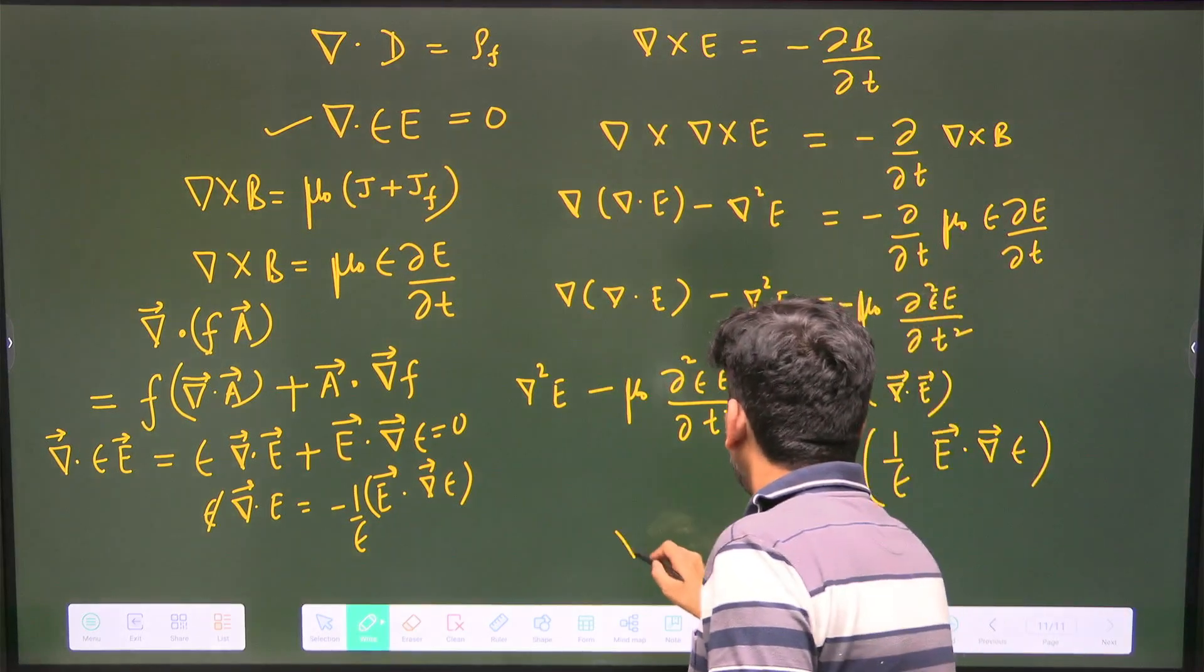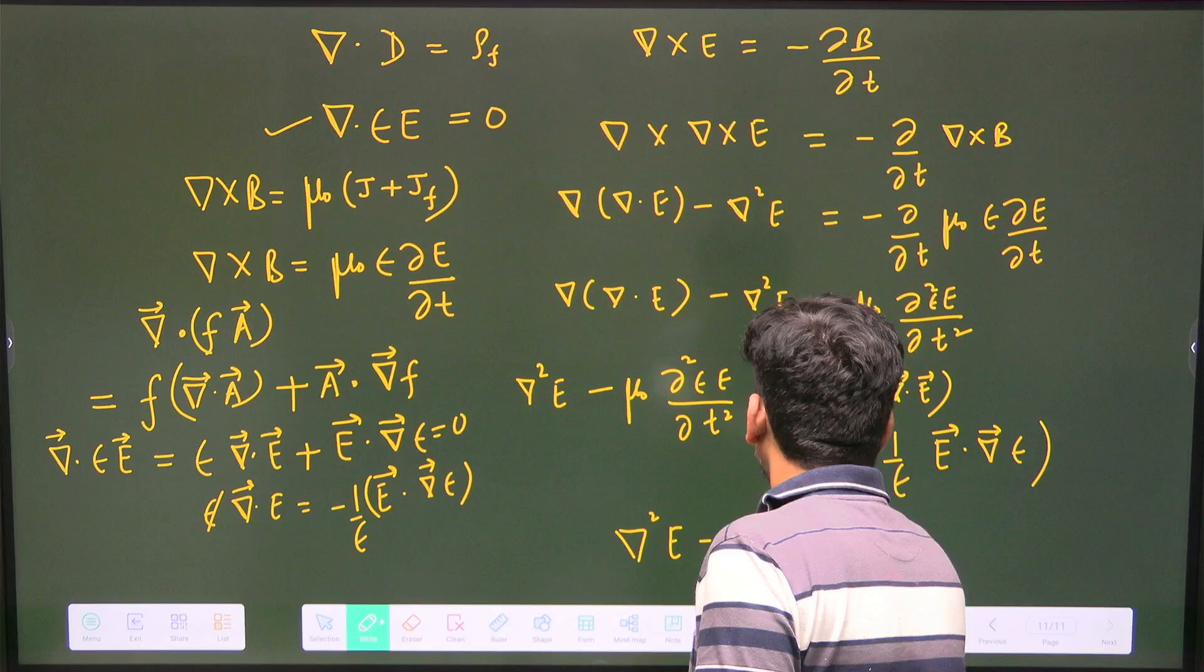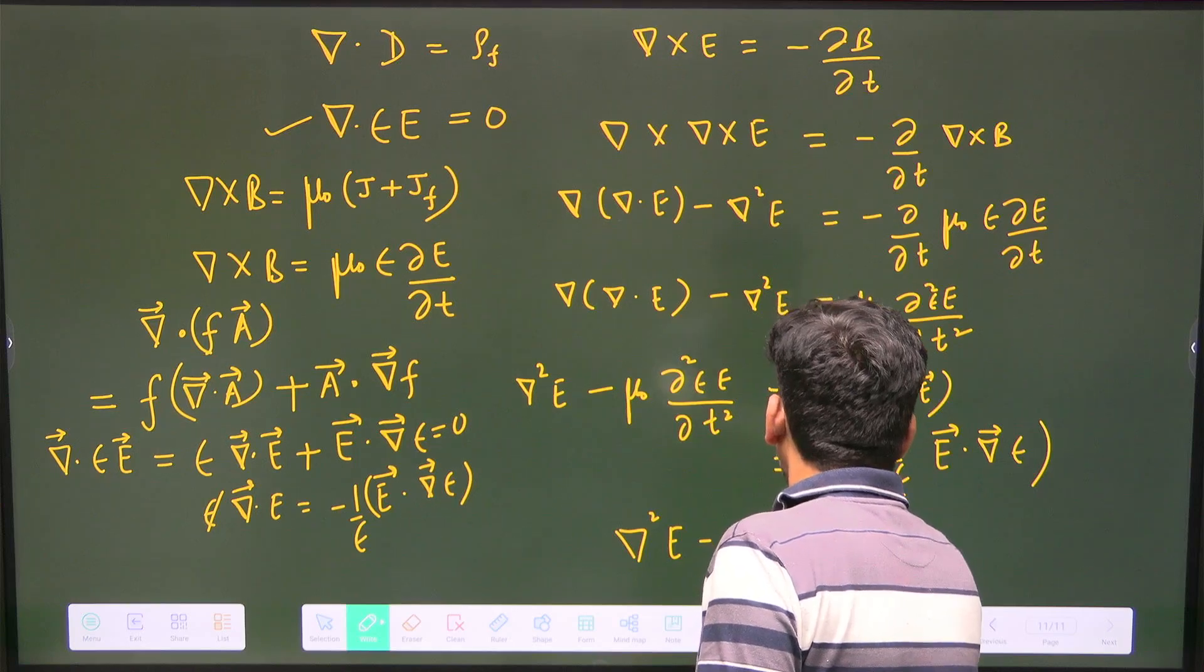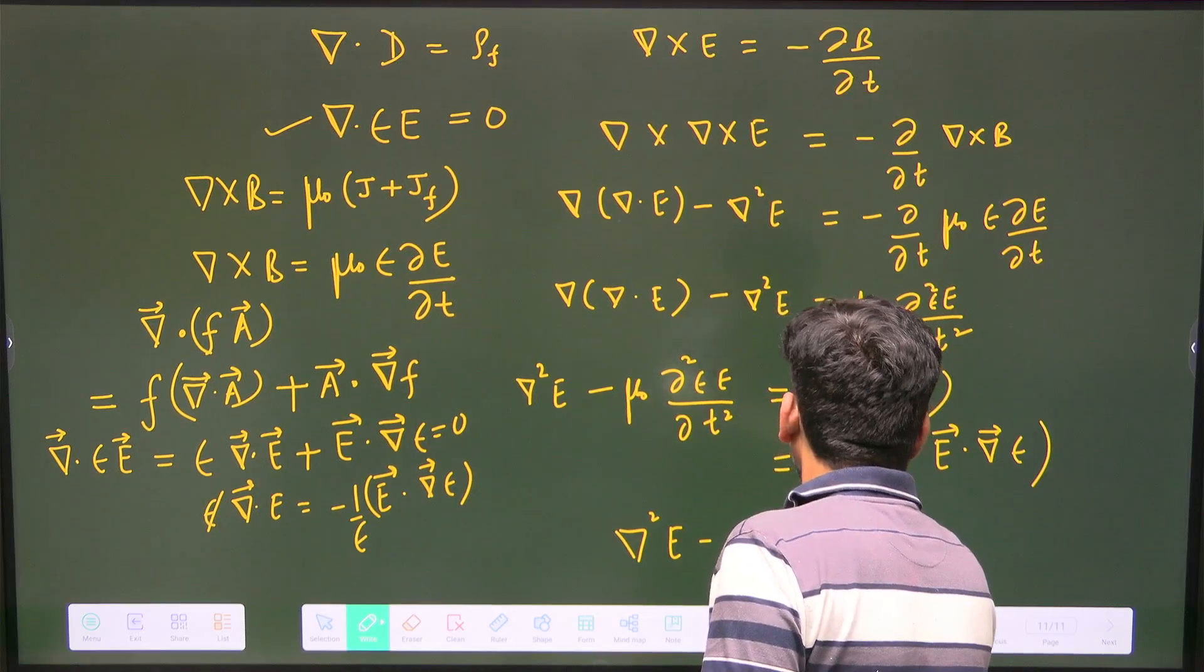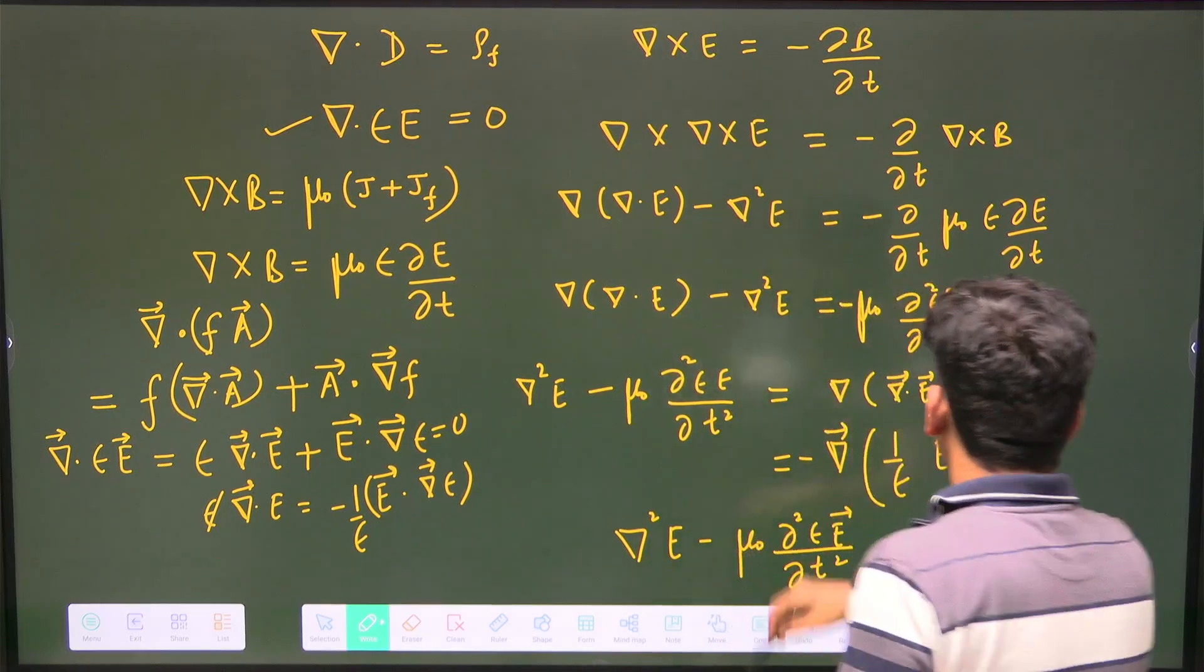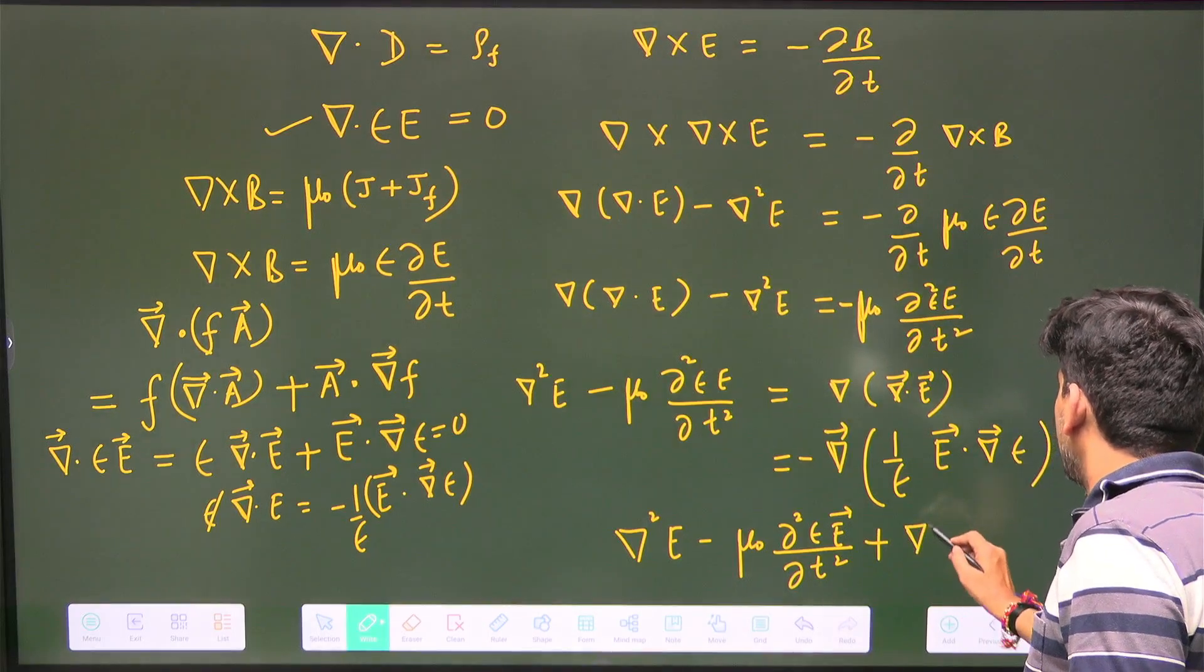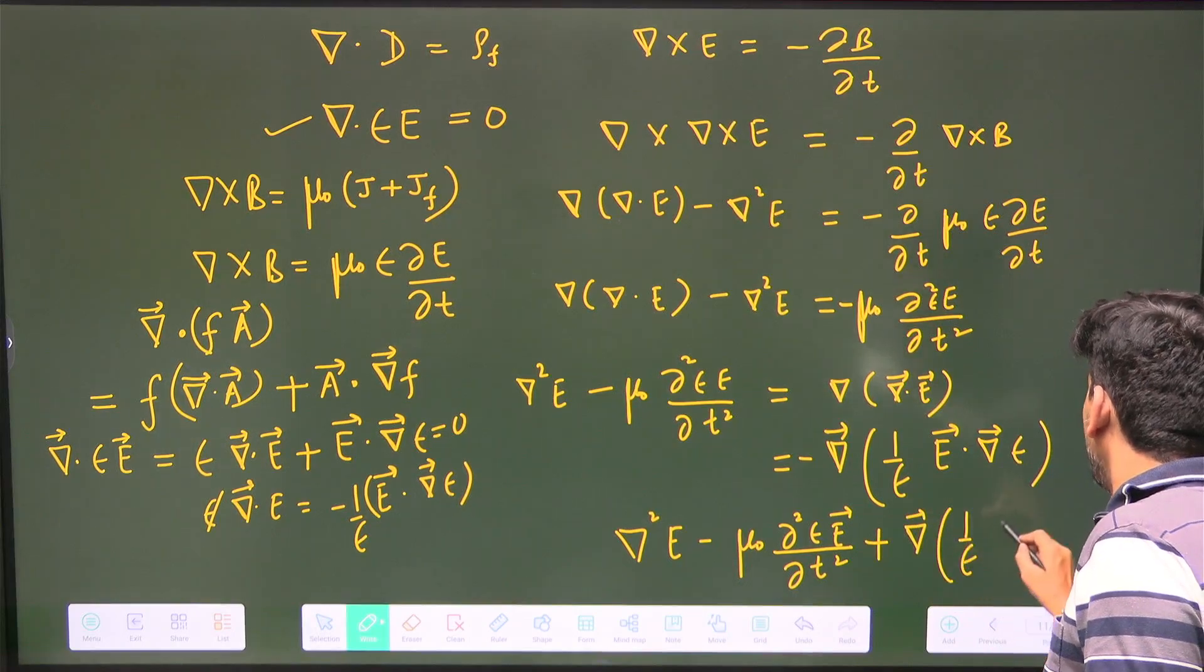Now just take it on one side. It will become del square E minus μ₀ del²(εE) by del t² plus grad of (1/ε) times E dot grad ε, and this is equal to zero.